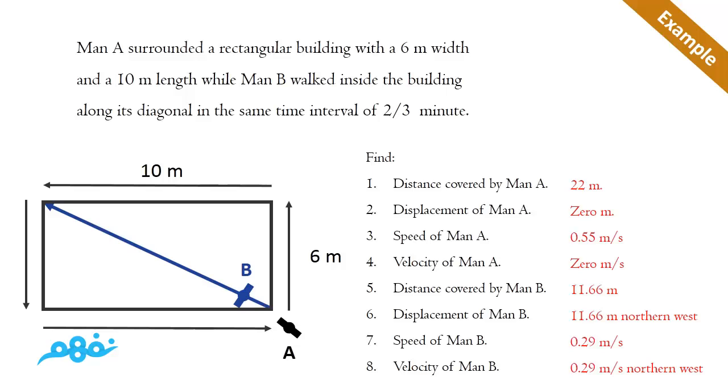While the velocity equals the change in displacement over the change in time, which is zero divided by 40, which equals zero. This was about Man A. What about Man B?